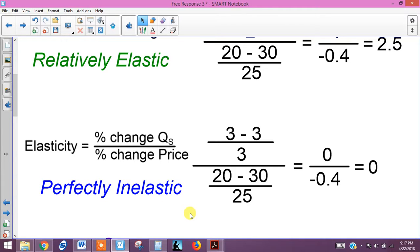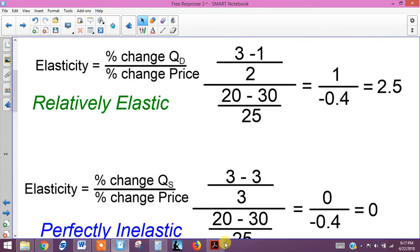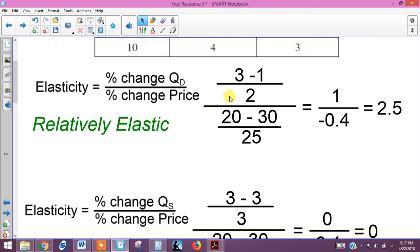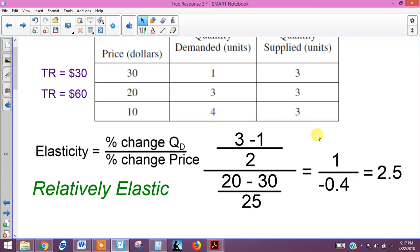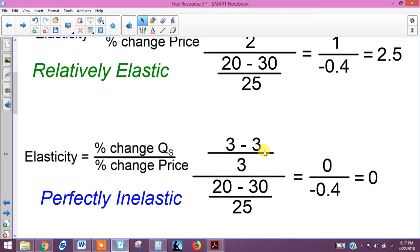Now we can also compute the elasticity of supply using our formula that we use up here. Everything is the same except we change our quantities. They're all going to be 3. So it's just 3 minus 3 over 3, which is 0. And when you have 0 in the numerator, it's just 0.